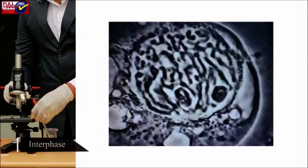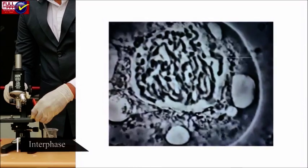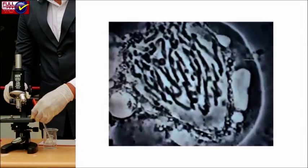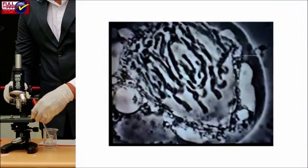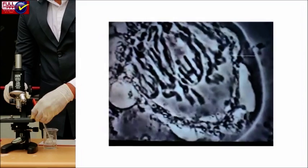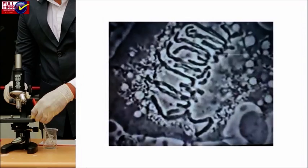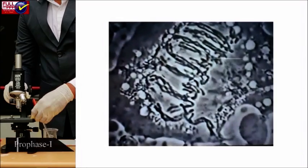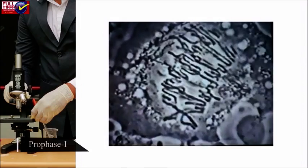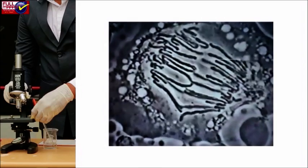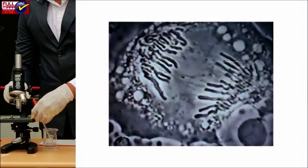Interphase: Before undergoing meiosis I, each cell will remain in an interphase during which the genetic material is duplicated due to active DNA replication. Prophase I: In the first meiotic division, reduction in chromosome number occurs without separation of chromatids. Prophase is the longest phase and has five stages.